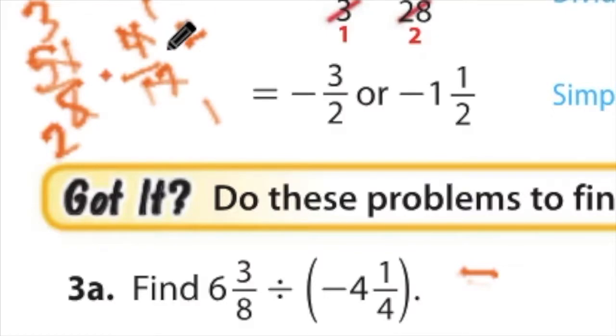For 2, sorry, for 3a, 3 times 1 is 3. 2 times 1 is 2. It's a negative because it's a positive divided by a negative. And negative 3 halves is the same thing as negative 1 and 1 half.